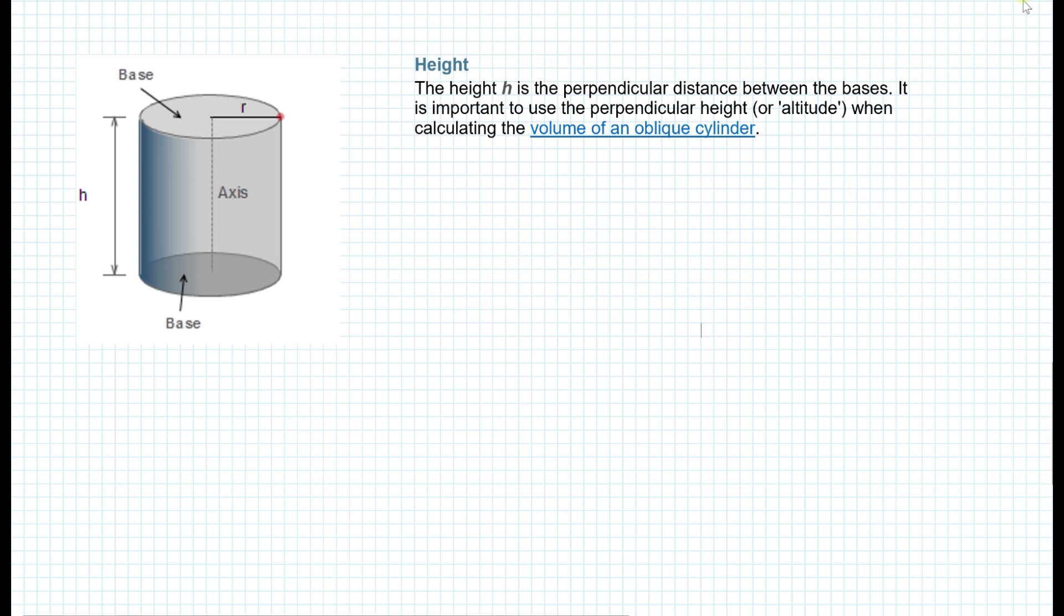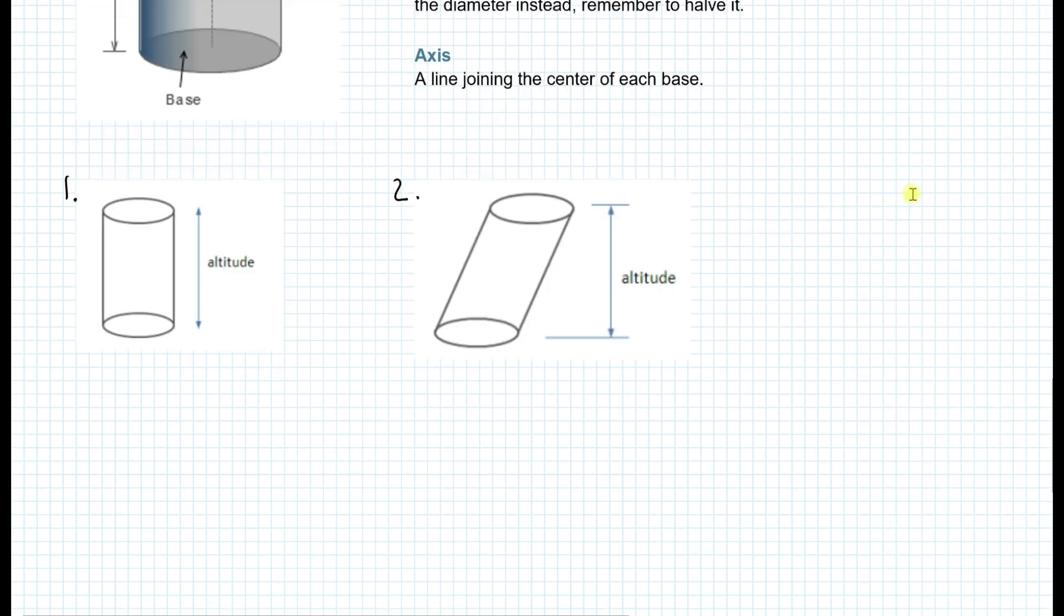The next thing is the radius. The radius R of a cylinder is the radius of the base. If you're given the diameter instead, remember to divide it by 2, or to half it. The axis is a line joining the center of each base. Now, if the bases are exactly on top of each other, or I should say in the same orientation as in figure 1, that is called a right cylinder.